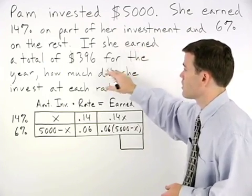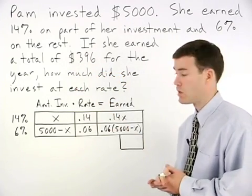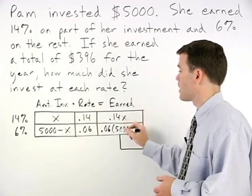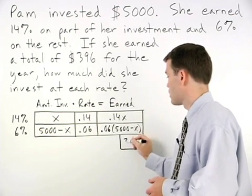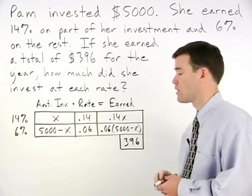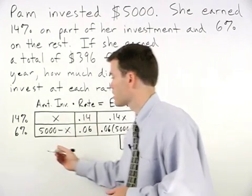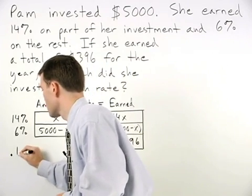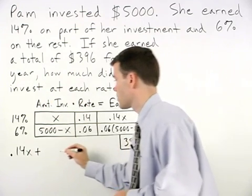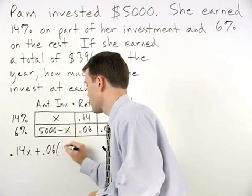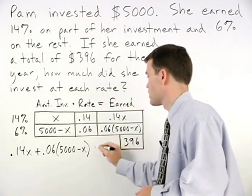Reading through the last part of the problem, we know that she earned a total of $396 in interest for the year. So if we add up the two amounts of interest that she earned at each rate, we'll get a total of 396. So we can set up an equation that reads .14x plus .06 times parentheses 5,000 minus x equals 396.